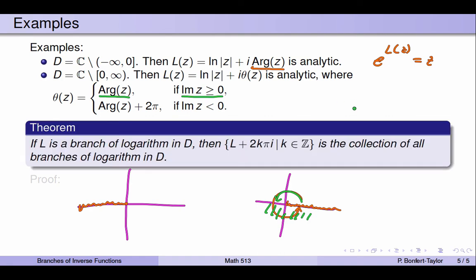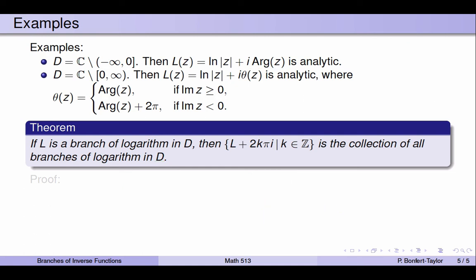Here's a theorem: if L is a branch of logarithm, then L plus 2k pi i, for integer k, is the collection of all branches of logarithm in D. So once you have found one branch of logarithm, you can find all branches in the domain D by adding multiples of 2 pi i to the function you originally found.